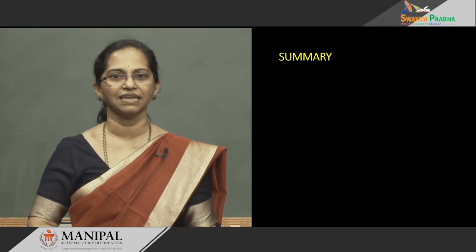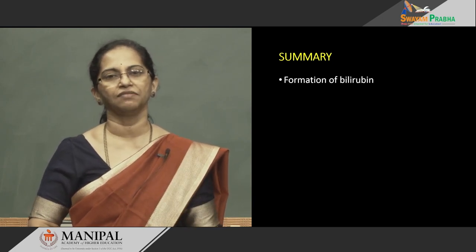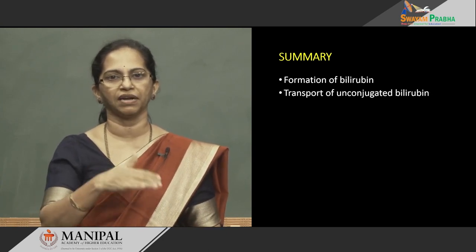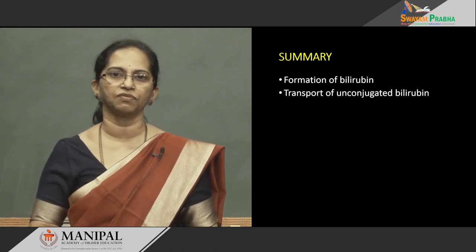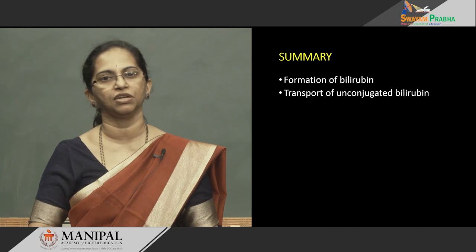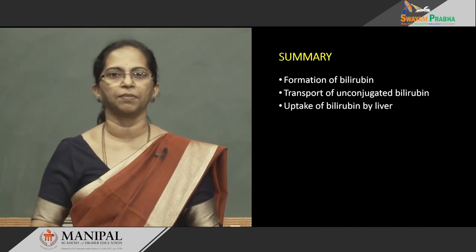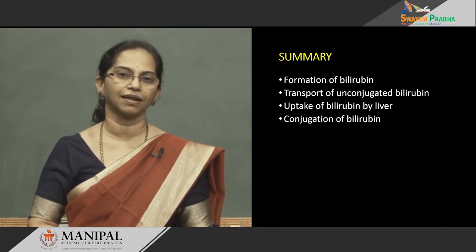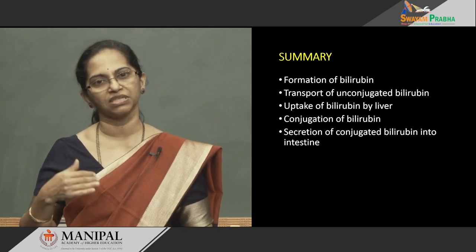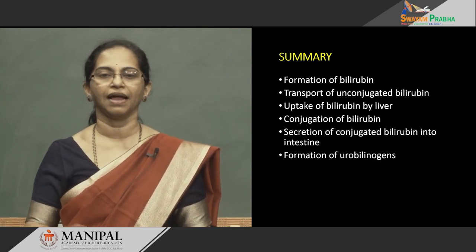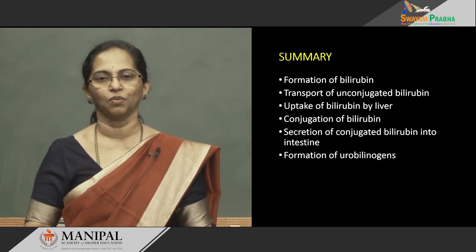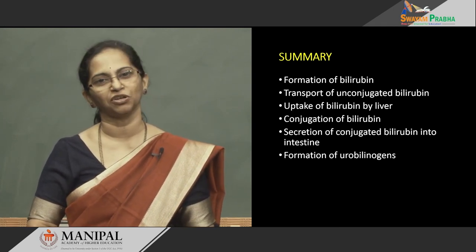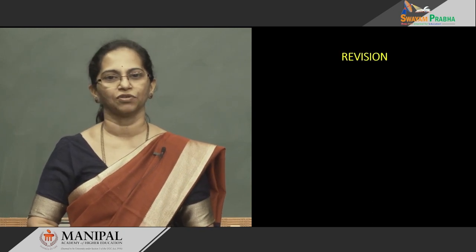Let us quickly summarize the formation and fate of bilirubin. First, we studied formation of bilirubin — a two-step process. Then we studied how it is transported in the blood along with albumin; if not transported with albumin, it can enter the brain and cause damage in a newborn. Next, we studied how it is taken up by the liver, how it is conjugated, and we spoke about Crigler-Najjar syndrome. Then we covered secretion into the bile, and finally, in the intestine, how it became urobilinogens — urobilinogen and stercobilinogen.